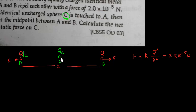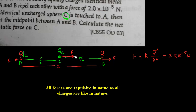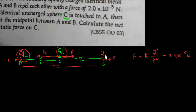There will be two forces on C: one by A and one by B. The separation from A to C is r/2 and from C to B is also r/2. The force by A on C is F1 (in one direction) and the force by B on C is F2 (in the opposite direction). F2 will be bigger because F1 is between q/2 and q/2, while F2 is between q/2 and q — so F2 acts on a larger charge.